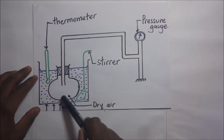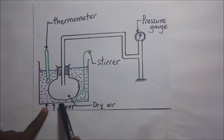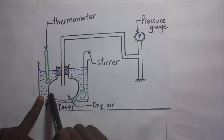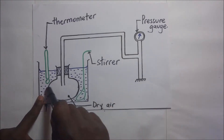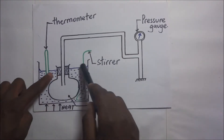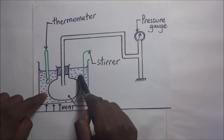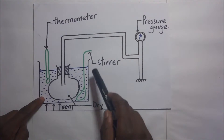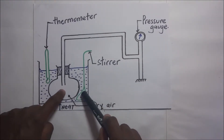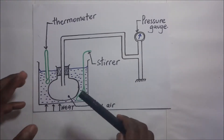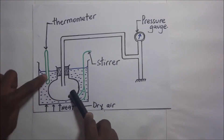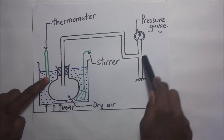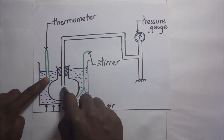The stirrer is meant to ensure even distribution of heat in the water. In here we have some dry air, and at the bottom is where we heat this liquid from. As we heat the liquid, we stir it so that the heat is evenly distributed, allowing us to read the temperature of the liquid on the thermometer. The temperature of this liquid is the same temperature exhibited by the dry air.